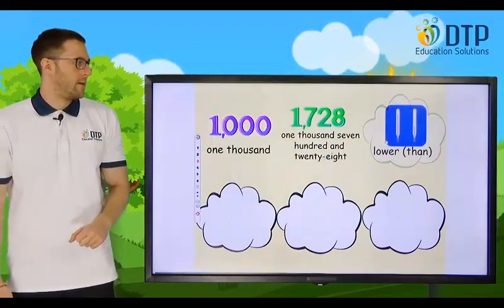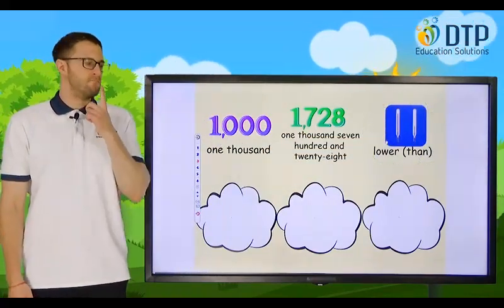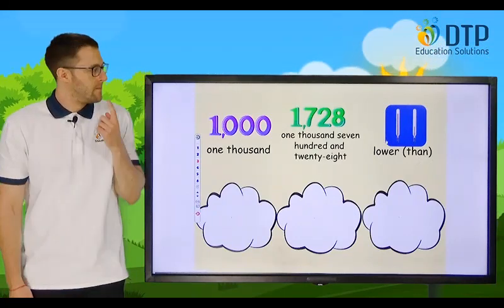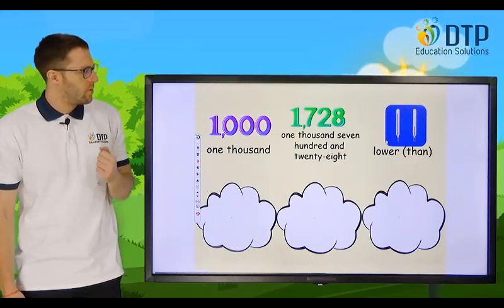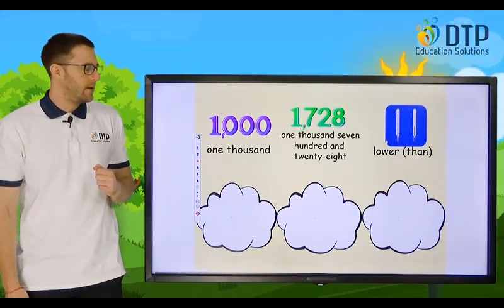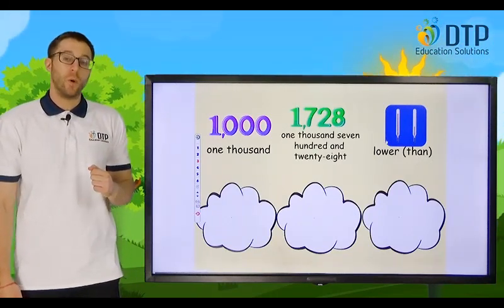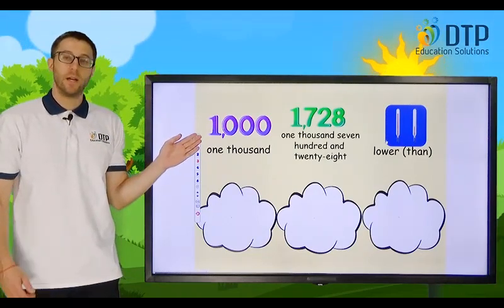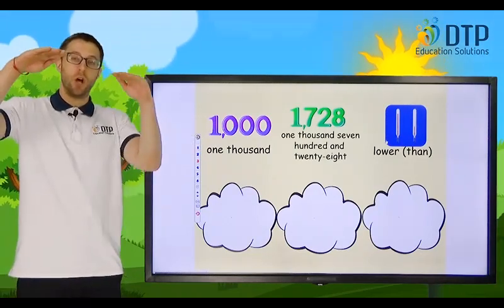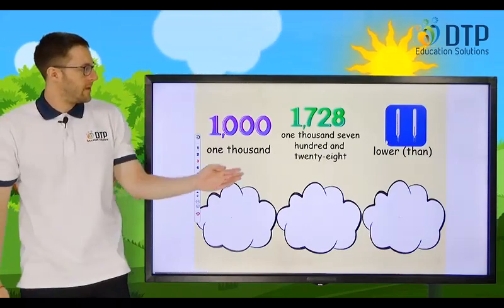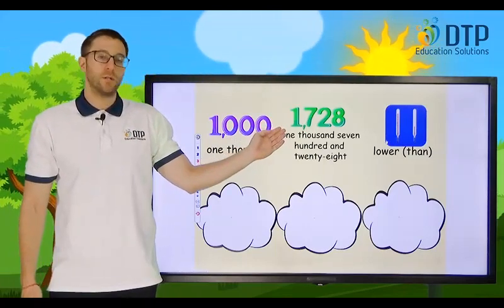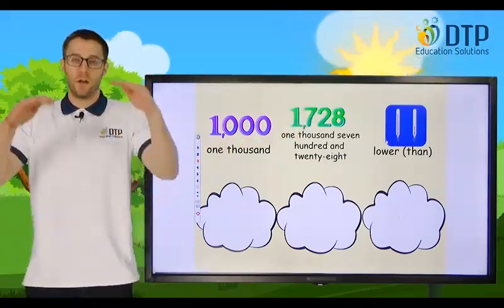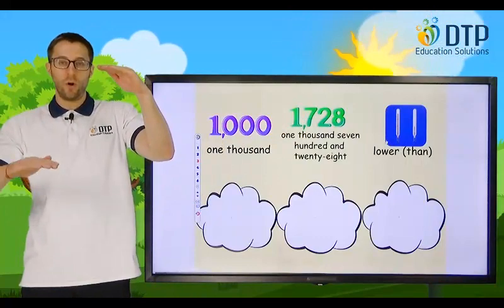Lower than. Lower than. Which number is lower than? We can say one thousand is lower than one thousand seven hundred and twenty-eight. Lower than.